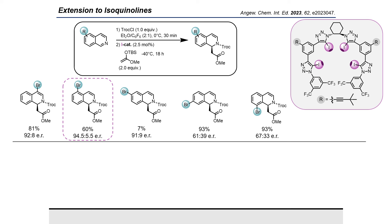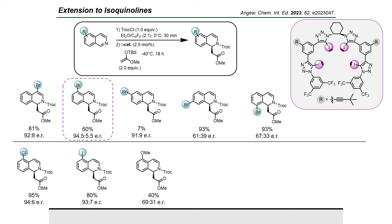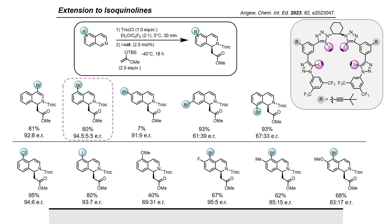The comparison between the halogens showed no significant trend, but with the methoxy group in the five position, the enantioselectivity dropped again. Based on the 5-bromoisoquinoline, we created a small scope and could increase the enantiomeric ratio up to 95 to 5.